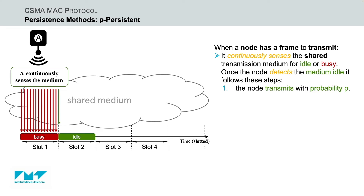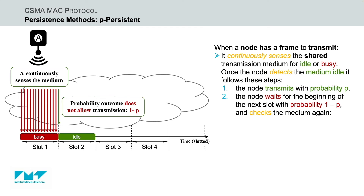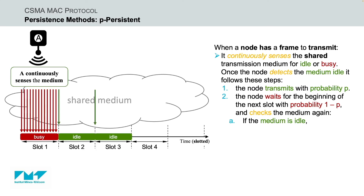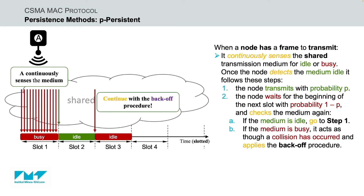With probability P, the node transmits its frame. If the probability outcome was P, node A transmits its frame. With probability 1-P, the node waits for the beginning of the next time slot and checks the shared transmission medium again. If the probability outcome was 1-P, node A does not transmit and waits until the beginning of the next time slot — slot 3 in this example. In the following time slot, slot 3, if the shared transmission medium is detected idle, it goes back to step 1. However, if the shared medium is detected busy, the node proceeds as though a collision has occurred and the back-off procedure takes place.